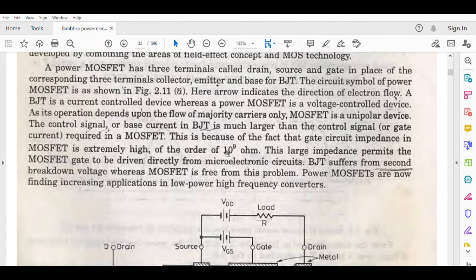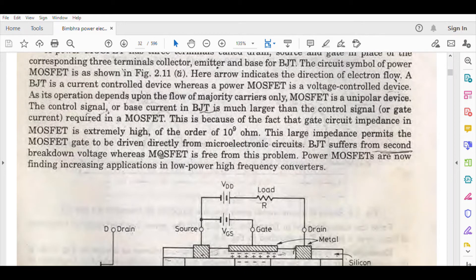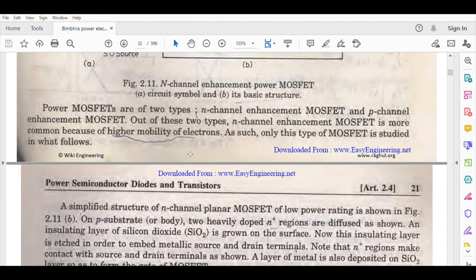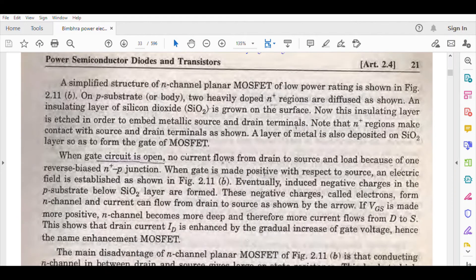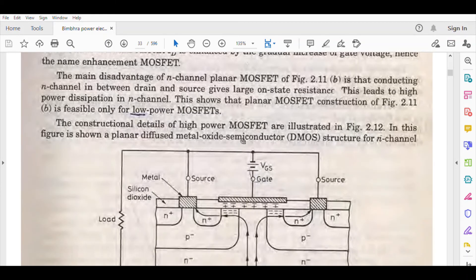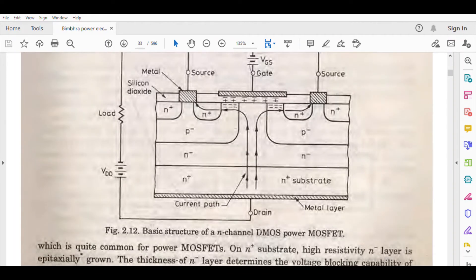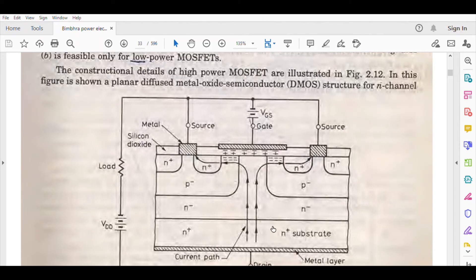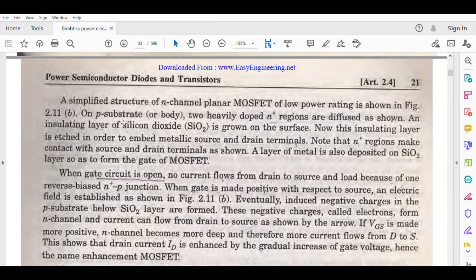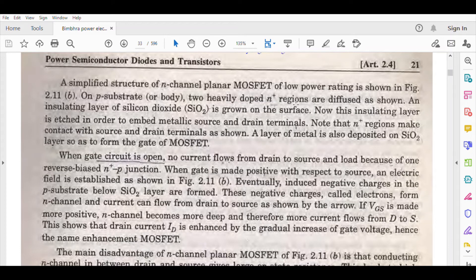MOSFET has extremely high gate input resistance, of the order of 10 to the 9 ohms. BJT suffers from second breakdown, whereas MOSFET is free from this problem. Power MOSFETs are now finding increasing applications in low-power, high-frequency converters.